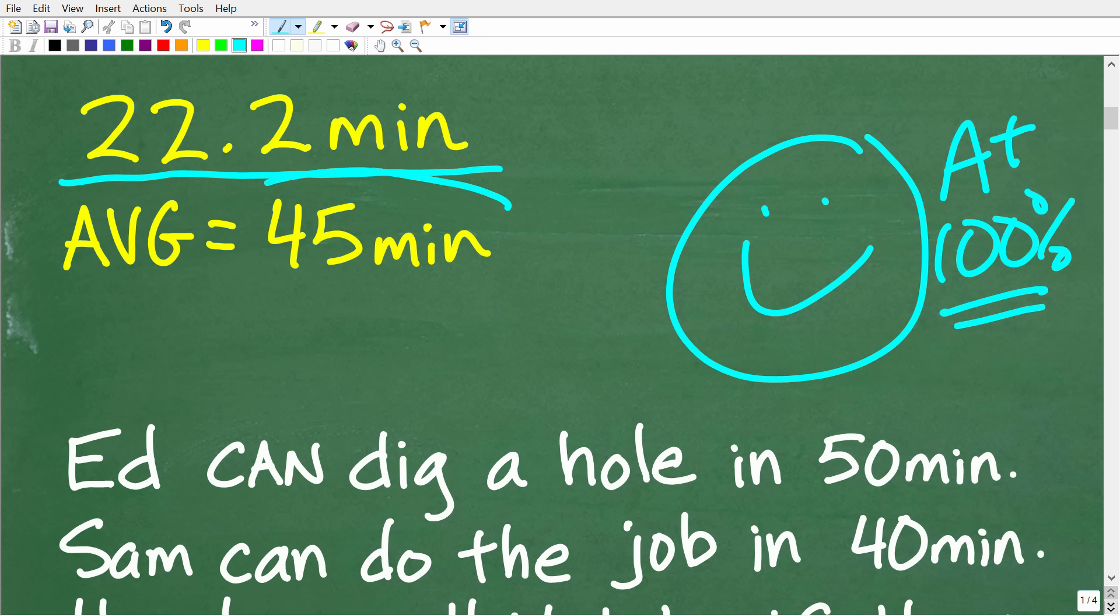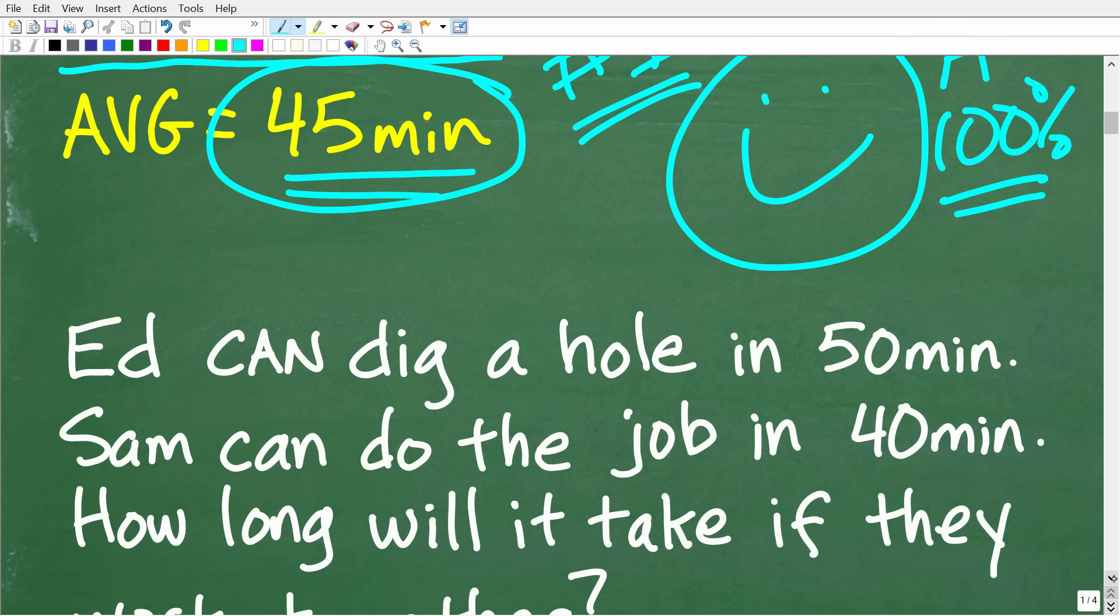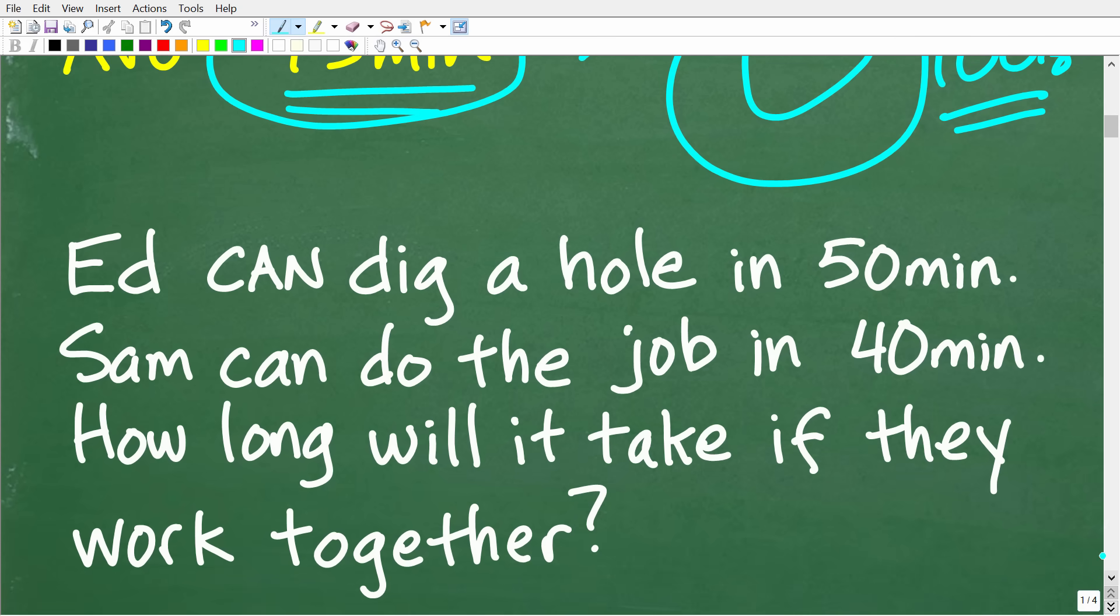But if you got 45 minutes as your answer, well, congratulations as well, because this is probably the number one wrong answer. So, let's see why 45 minutes is not the correct answer. What a lot of people do is they think that Ed can do this job in 50 minutes, and Sam can do this job in 40 minutes.